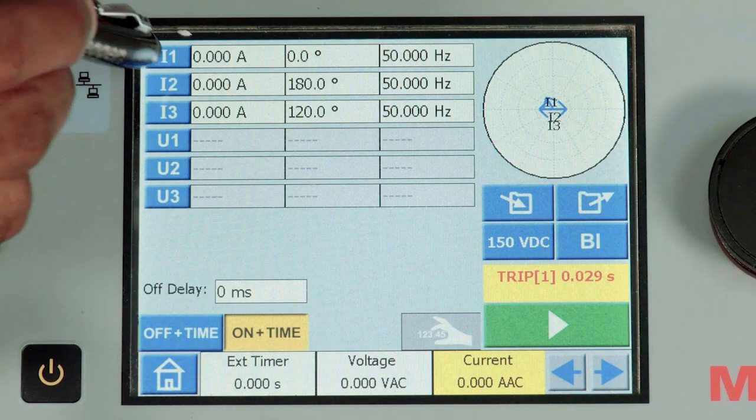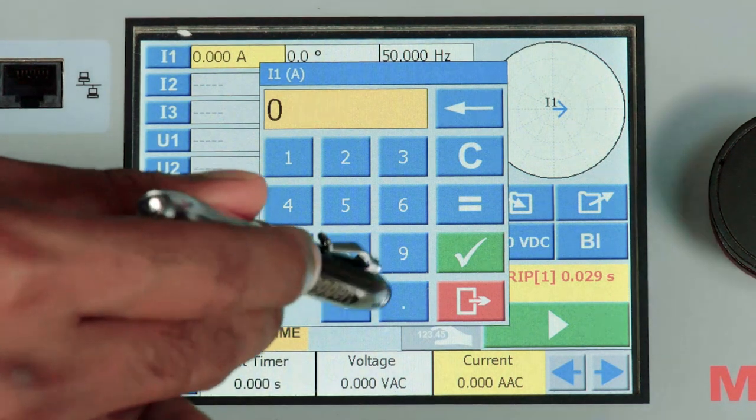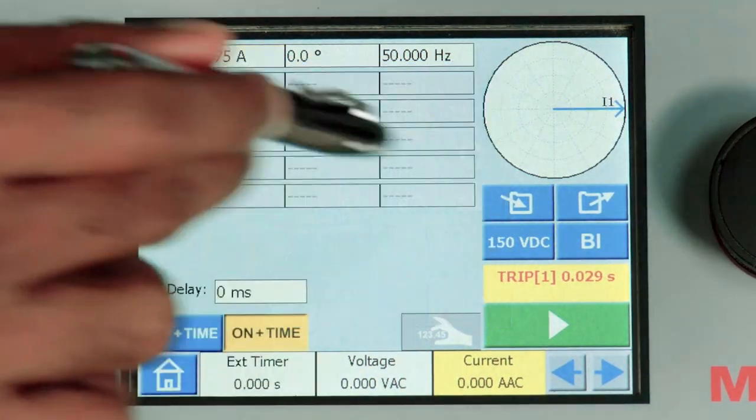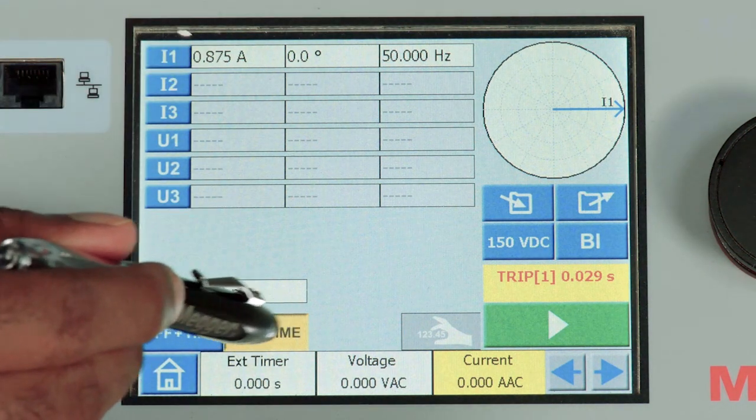Let us inject 0.875 amps in HV and verify the tripping. As we are using only one phase, I have disabled the other. In one phase, 0.875 amps and the on plus time is selected.